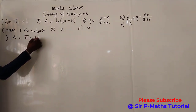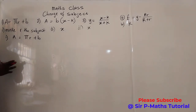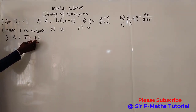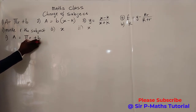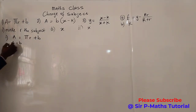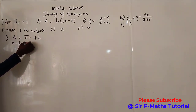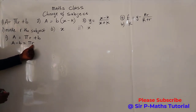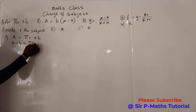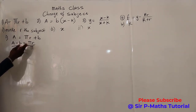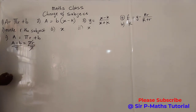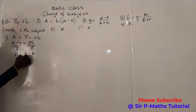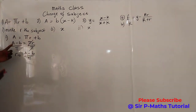Starting with the first one: a = 5r + d, and we want to make small r the subject. The first thing to consider is addition and subtraction — carry every variable connected to r by plus or minus across the equality sign. So we get a minus d = 5r. These two are held together by multiplication, so we divide both sides by 5 (the coefficient), giving r = (a - d) / 5.